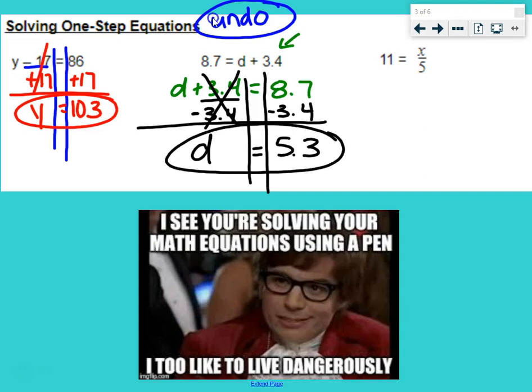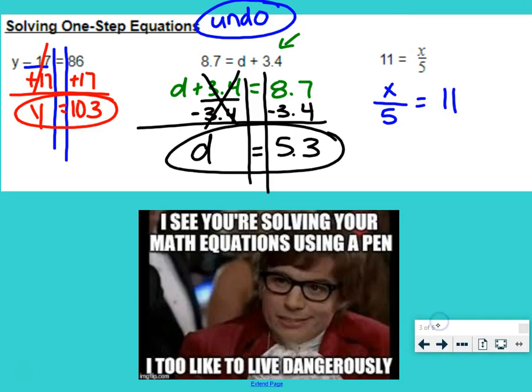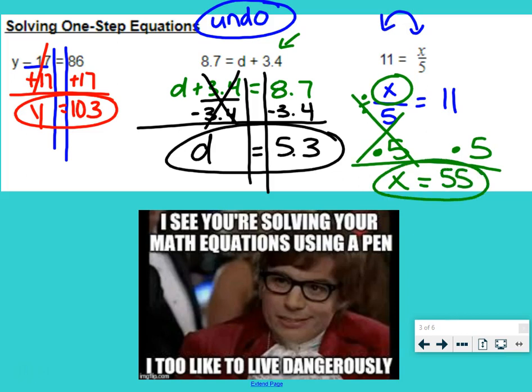Last example. Again, our variable is on the opposite side. So if you want to start by flipping that around, we just change the sides of the equation. We just flip around the equal sign. Now, a fraction bar means divide. So right here we have division. Opposite of division is multiplication. So we're going to multiply the right side and the left side by 5. The 5's cancel out, leaving us with our variable x. And 11 times 5 is 55. So that would be our final answer.